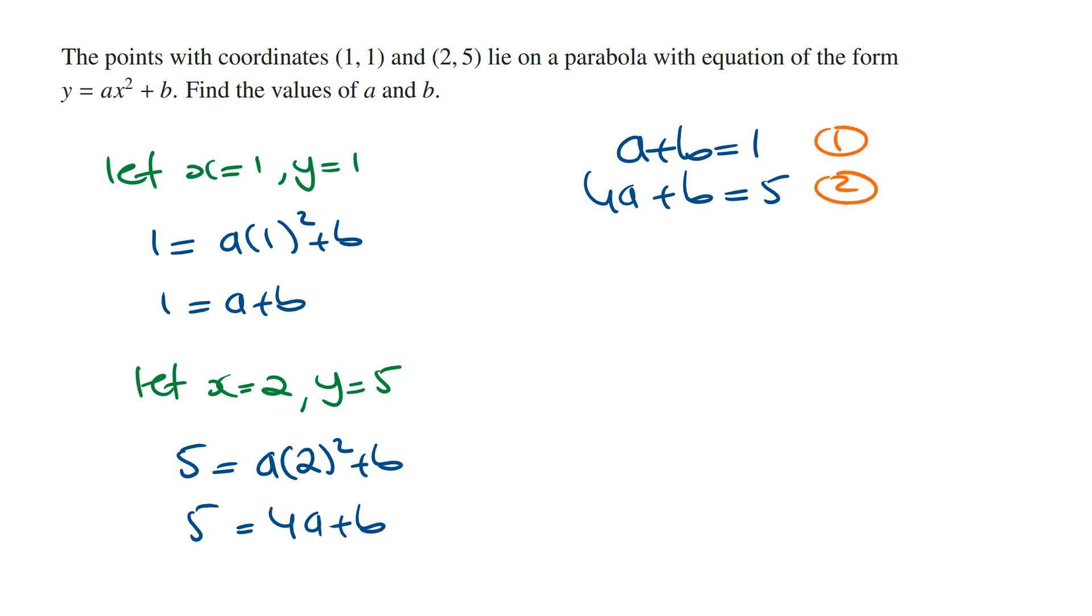From here, using the process of elimination, we can say the second equation minus the first equation. So 4a - a is 3a, and b - b is 0, and 5 - 1 is 4. So solving for a, a = 4/3.